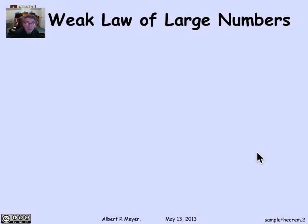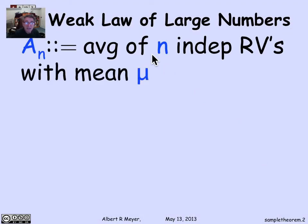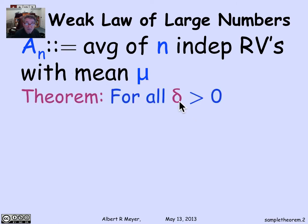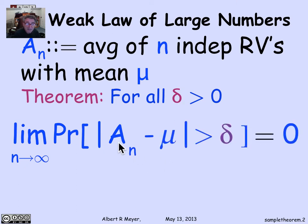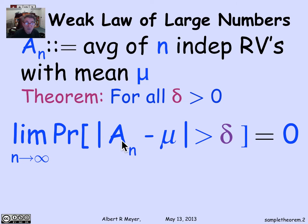The law of large numbers says that if you have n independent identically distributed random variables with mean mu, and we let a_n be their average, then for every positive number delta, the probability that the average differs from the mean by more than delta goes to zero as the number of trials increases. That means if you tell me what you think 'close' means and what you think 'very likely' means, then I can guarantee that by doing enough trials, the likelihood that the mean will be outside the tolerance is as small as you want.